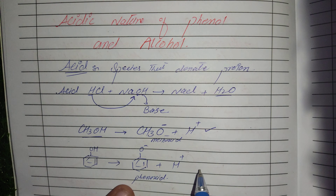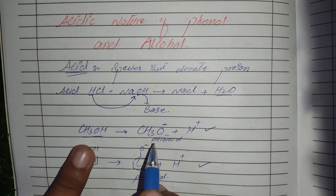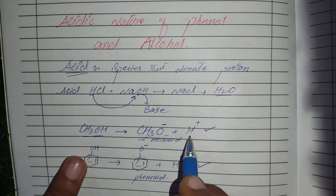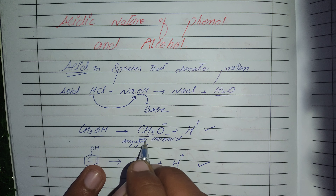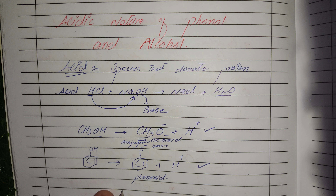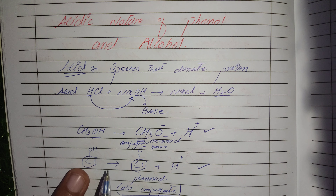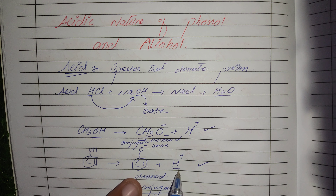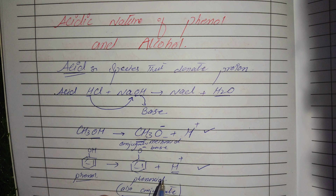Both methanol and phenol are acids, but their strengths vary. A substance is a strong acid when its conjugate base is weak. When methanol dissociates and gives up a proton, the resulting species is its conjugate base. A weak conjugate base has a low ability to pick up a proton. When phenoxide picks up a proton and reforms phenol, the acidic strength is lower.